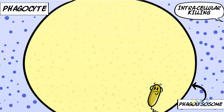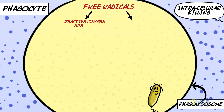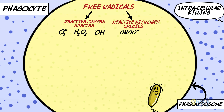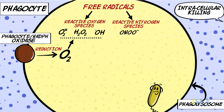The killing or elimination of microbes is accomplished by chemicals called free radicals, which are essentially of two types: the reactive oxygen species and the reactive nitrogen species. Reactive oxygen species are derived by reduction of oxygen by an enzyme called phagocyte oxidase or NADPH oxidase, and reactive nitrogen species are derived from nitric oxide combining with superoxide.